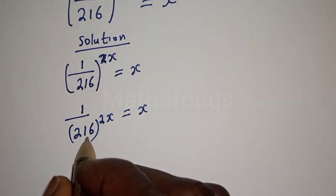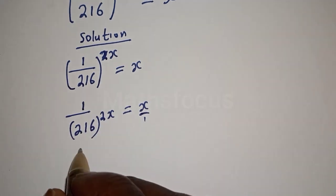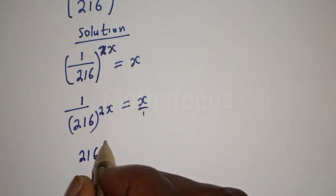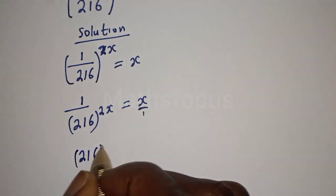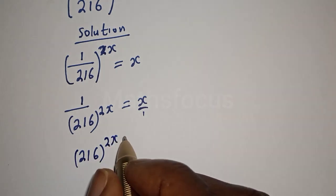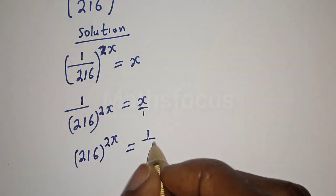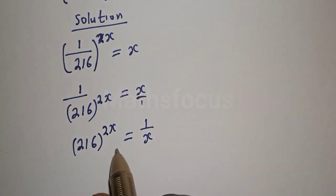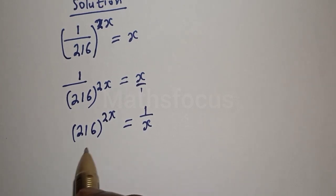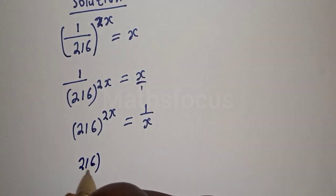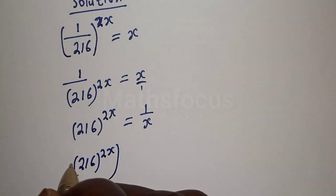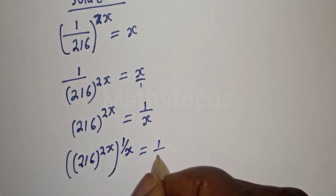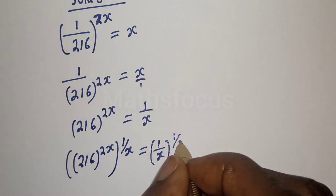Taking the reciprocal, we have 216 raised to power 2x is equal to one over x. At this point we can multiply the exponents on both sides by one over x. That is: 216 raised to power 2x, multiplied by one over x, is equal to one over x multiplied by one over x.